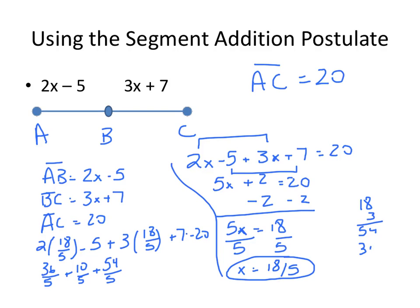So now we have 36 plus 10 plus 54. And so that is 100. So that is equal to 100 fifths, which is equal to 20. So our check work is good. So we're happy with this result. Nasty fractions, but fractions happen sometimes.